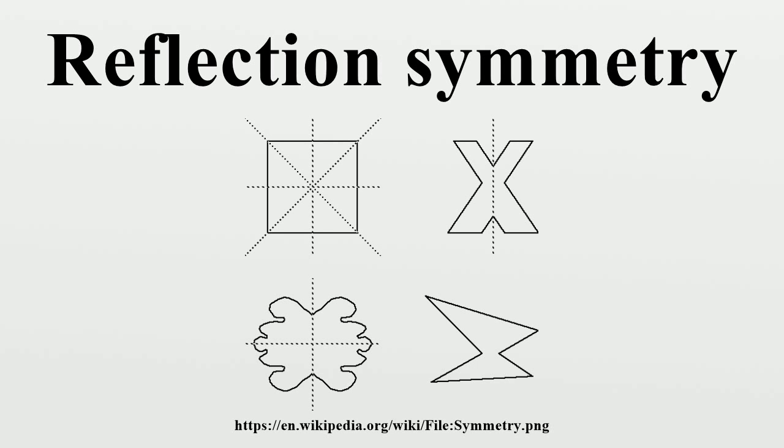and isosceles trapezoids. All even-sided polygons have two simple reflective forms: one with lines of reflection through vertices and one through edges.